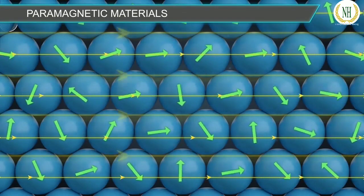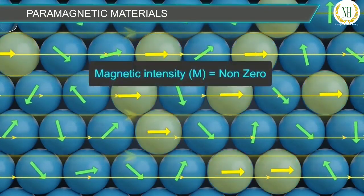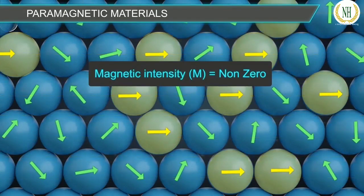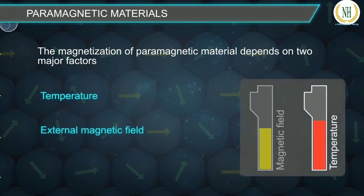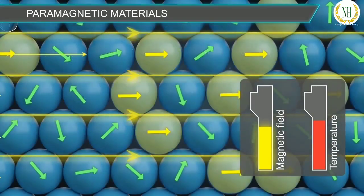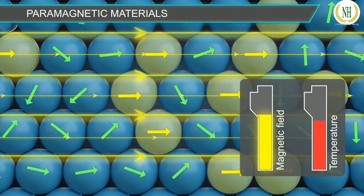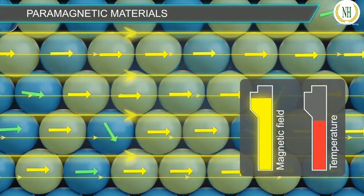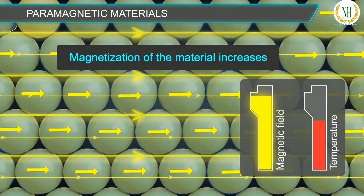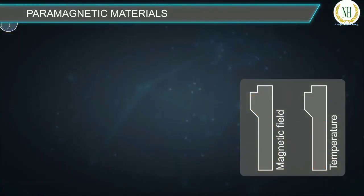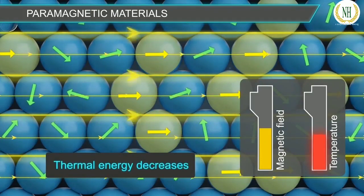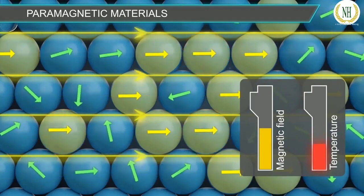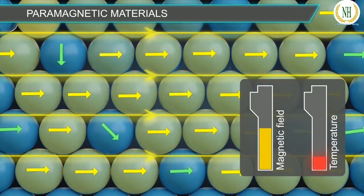Due to these opposing factors, only a small number of dipoles align in the direction of the magnetic field, and the magnetization intensity becomes non-zero. The magnetization of a paramagnetic material depends on two major factors: temperature and external magnetic field. As the magnetic field increases, more dipoles overcome the thermal energy and align with the field. When temperature decreases, thermal energy decreases, and more dipoles align with the magnetic field, so magnetization increases.